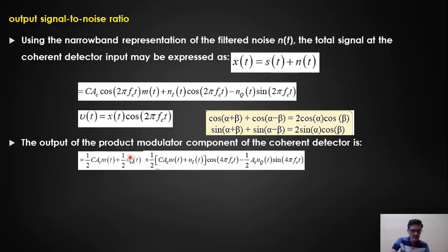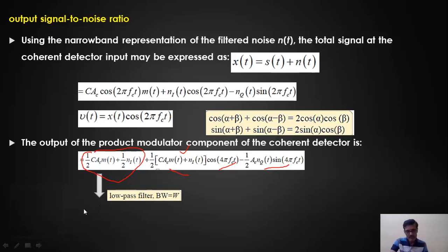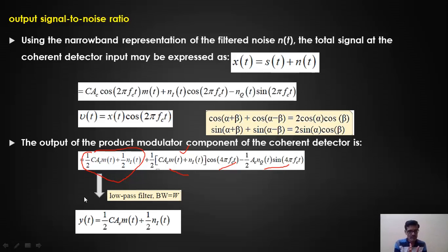Passing v(t) through the low-pass filter retains only the low-frequency components. The terms with cos(4πfct) and sin(4πfct) are at 2fc and are rejected as high-frequency components. The low-pass filter output y(t) = ½·c·Ac·m(t) + ½·nᵢ(t). In the absence of noise, y(t) is proportional to m(t), so the message signal is recovered. The noise contribution at the output is ½·nᵢ(t).